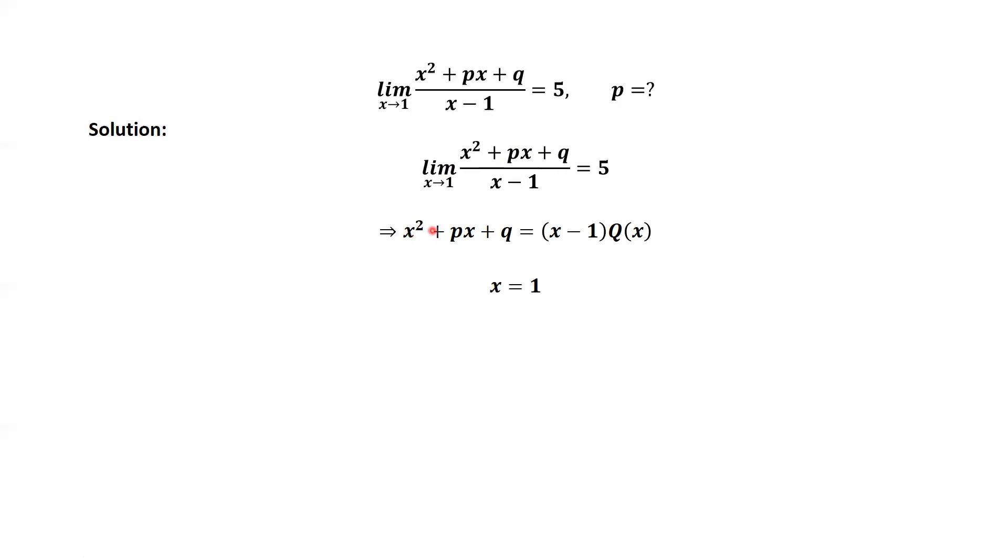We replace x by 1 from this equation. This implies 1 squared plus p times 1 plus q equals 0. Therefore, q equals negative p minus 1.